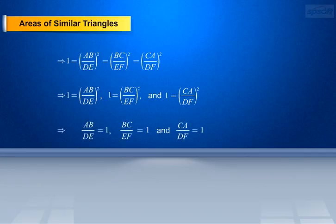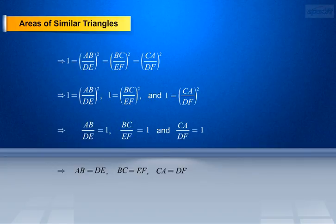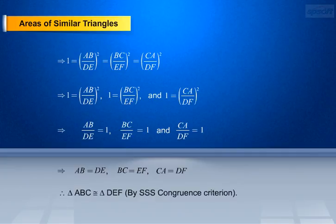This implies that AB/DE equals 1, BC/EF equals 1, and CA/DF equals 1. This implies that AB equals DE, BC equals EF, and CA equals DF. Therefore, by SSS congruence criterion, we can say that triangle ABC is congruent to triangle DEF.